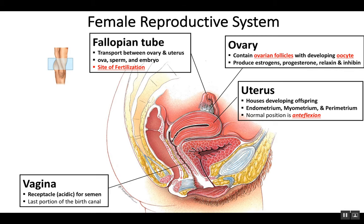The vagina serves as a receptacle for semen. As you recall, semen needs to be an alkaline pH in order to neutralize the acidity of the vagina. It also serves as the last portion of the birth canal.